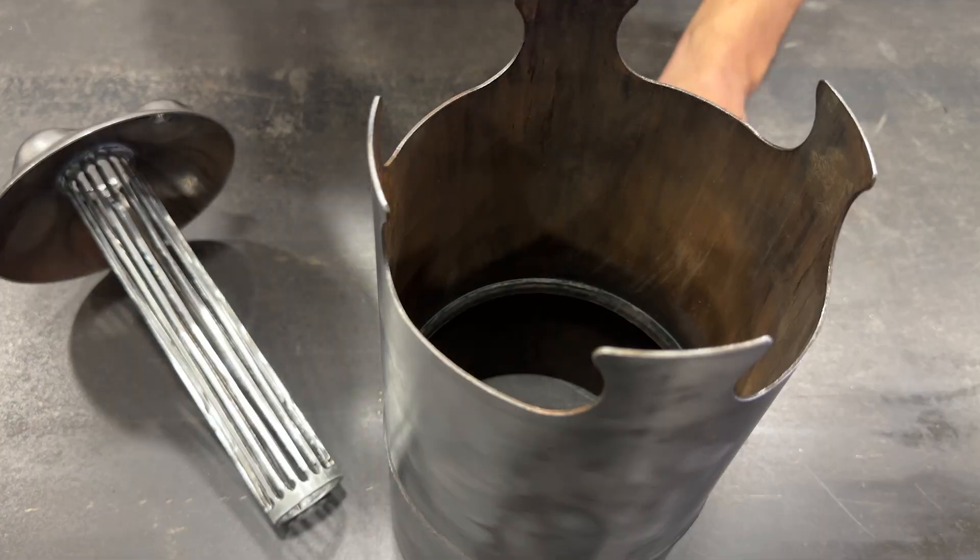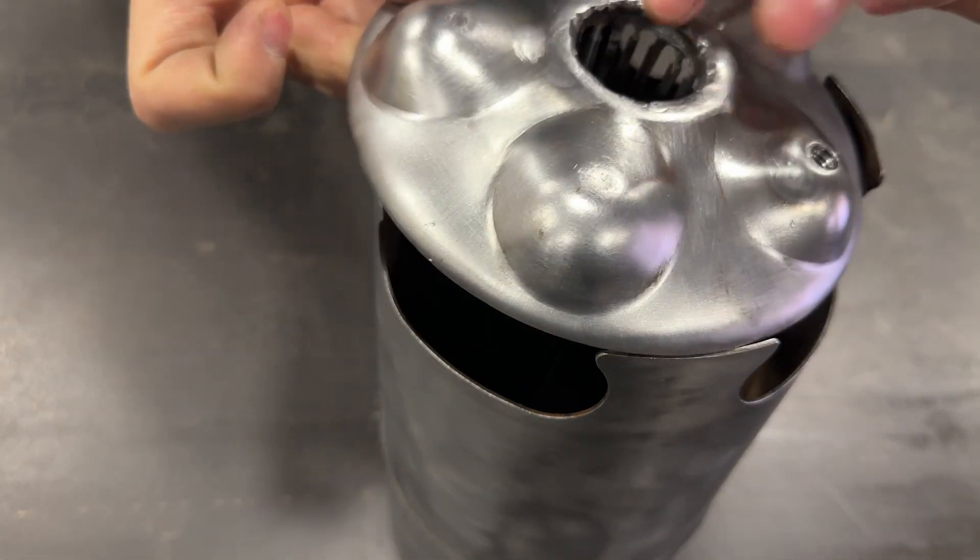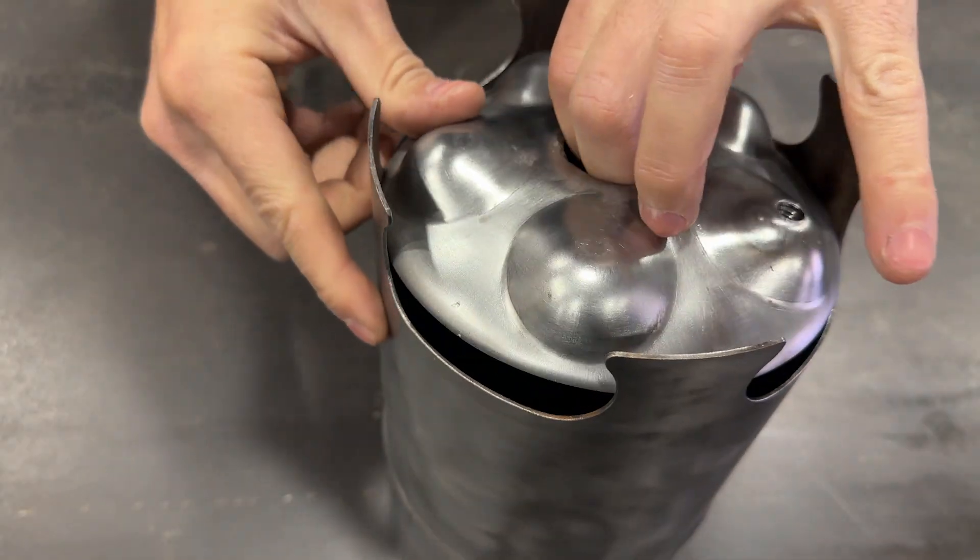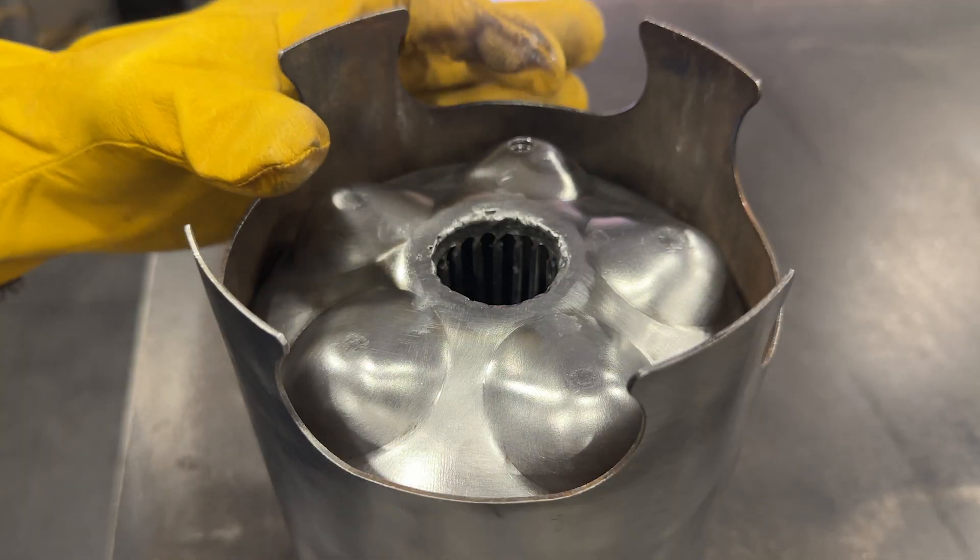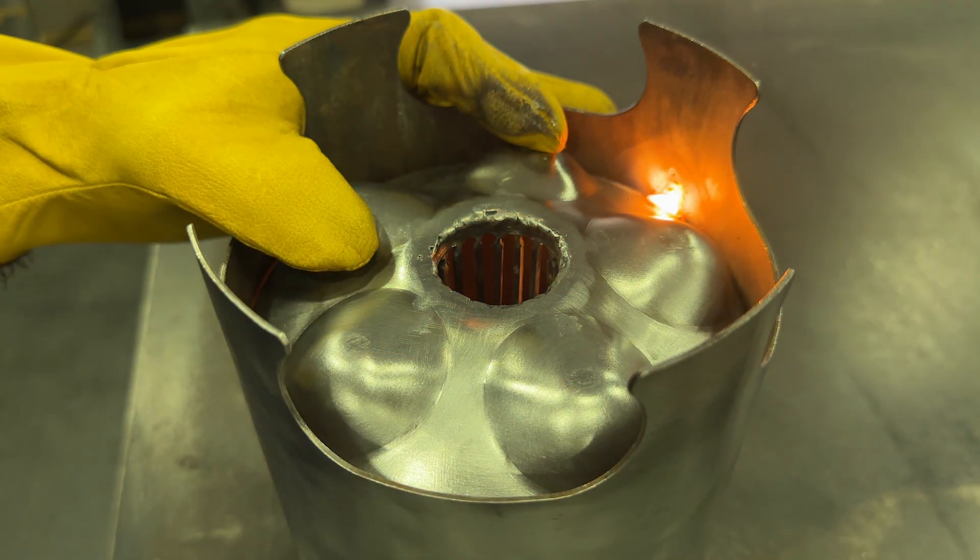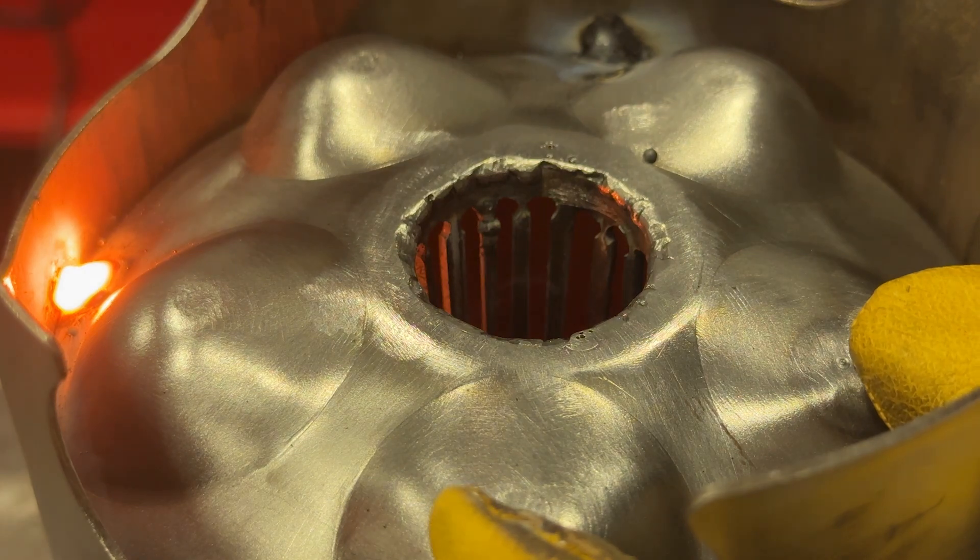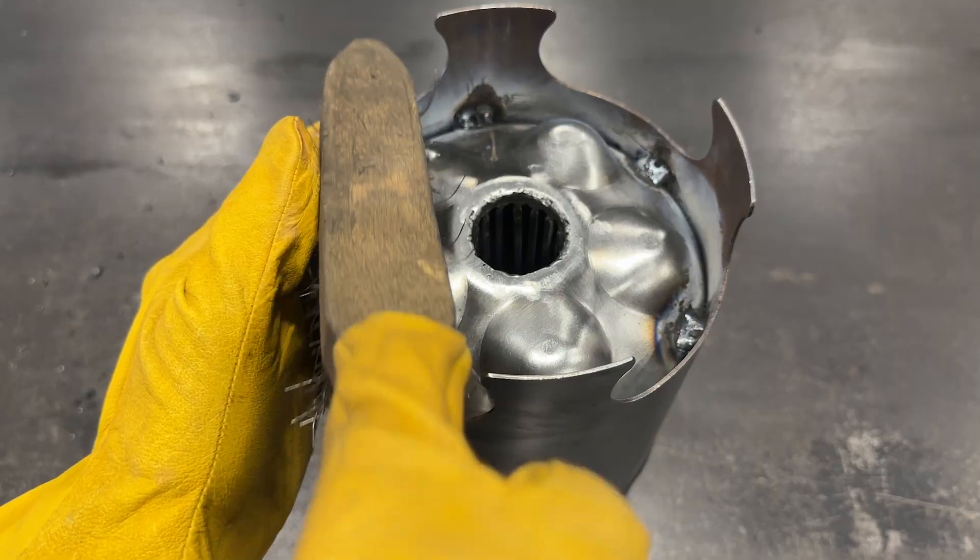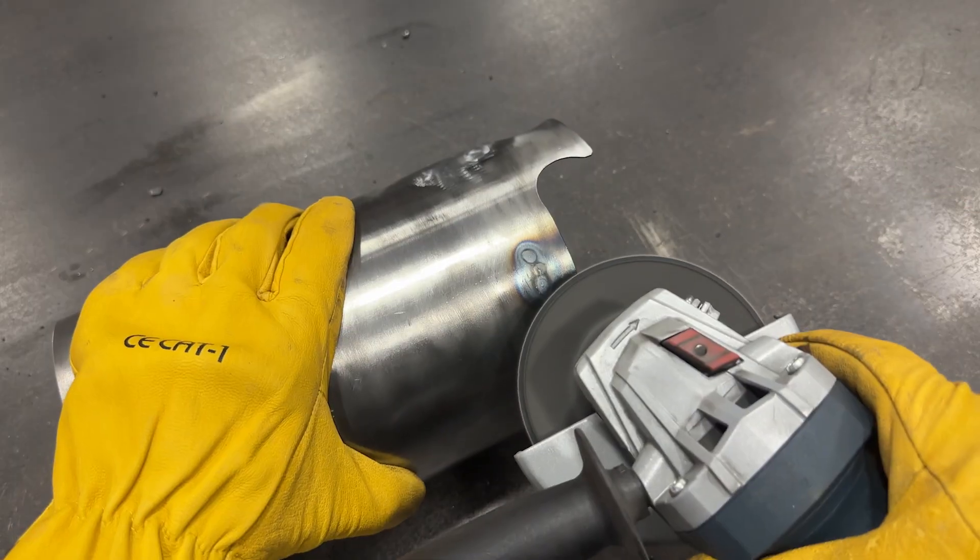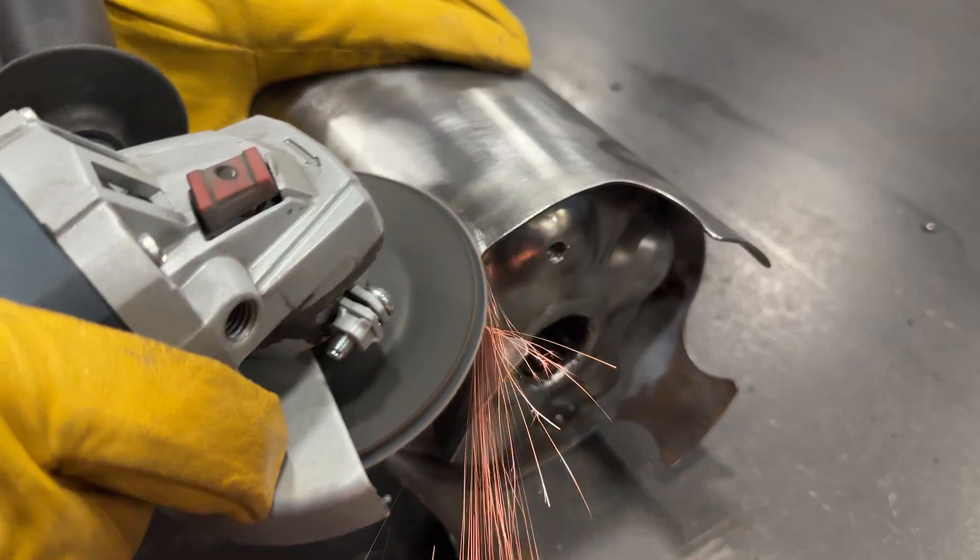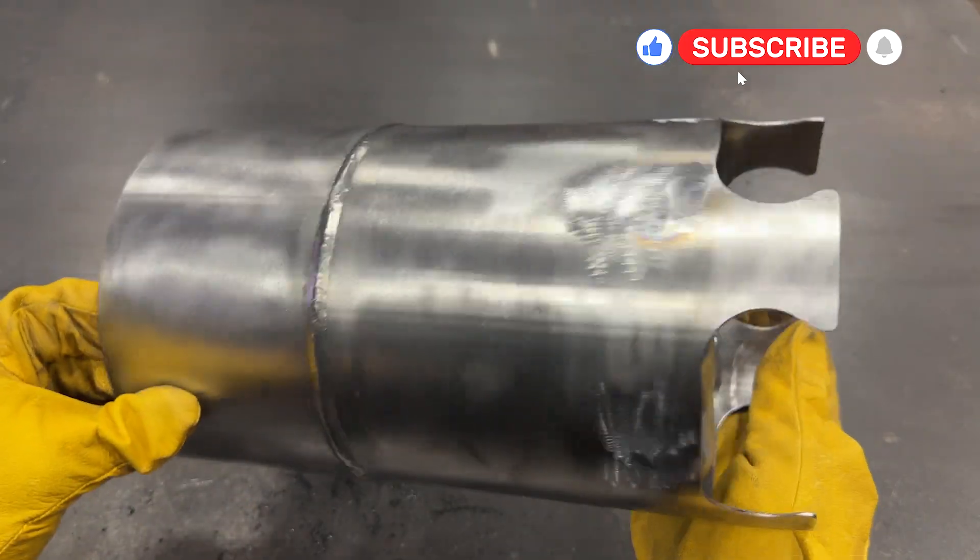Now it's time to join it to the stove body. This piece will be the bottom of our stove. After placing it, we join it with spot welds. And we smooth all the surfaces again. The central tube must be perfectly centered inside.